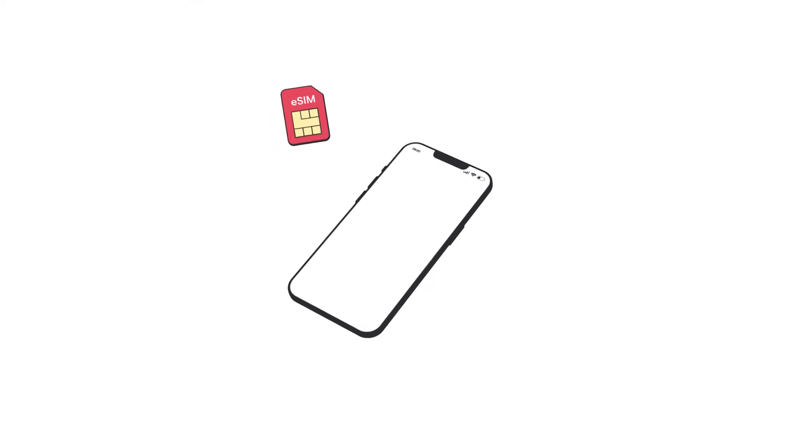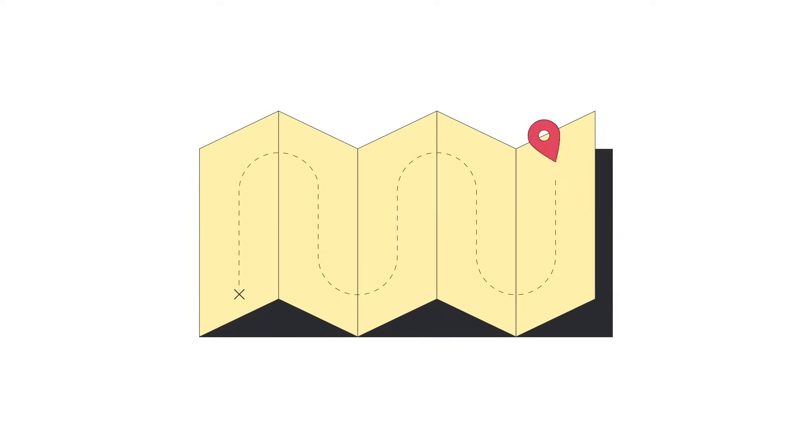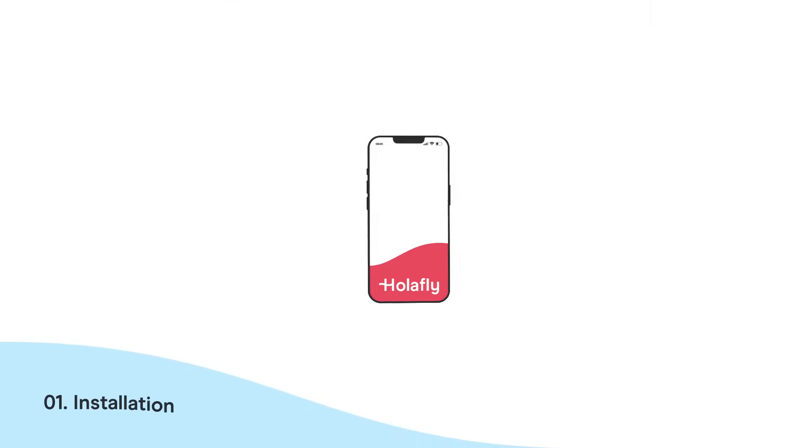Installing and activating an Olifly eSIM on your iPhone is really simple. Remember to install your eSIM a few hours before your trip, and only activate it when you arrive at your destination. Once you have made your purchase on our website, we will send you an email with everything you need to know to complete this process. Now, let's get started.